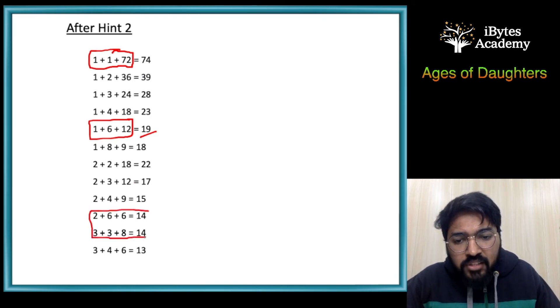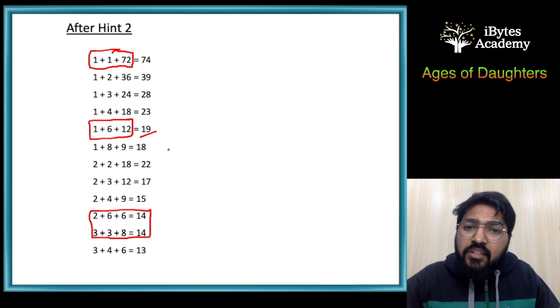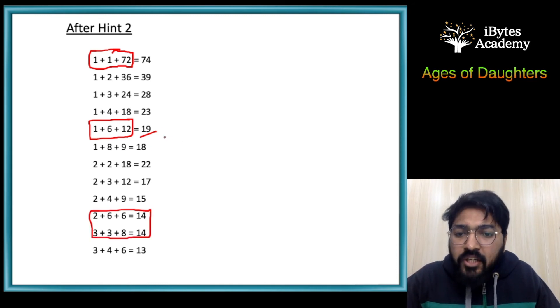The sum has to be 14 because out of these two possibilities he is still not sure. 14 is the only possibility.